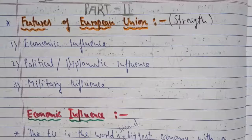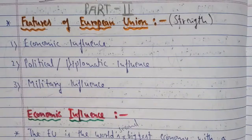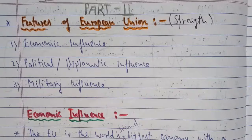Good morning to all students of class 12th political science. We are doing the third chapter of your book, named 'New Centers of Power' according to the new revised syllabus, though in your NCERT book it is called 'Alternative Centers of Power.' Some topics have been added to this chapter, which we will be covering. We had started with the topic of the European Union.